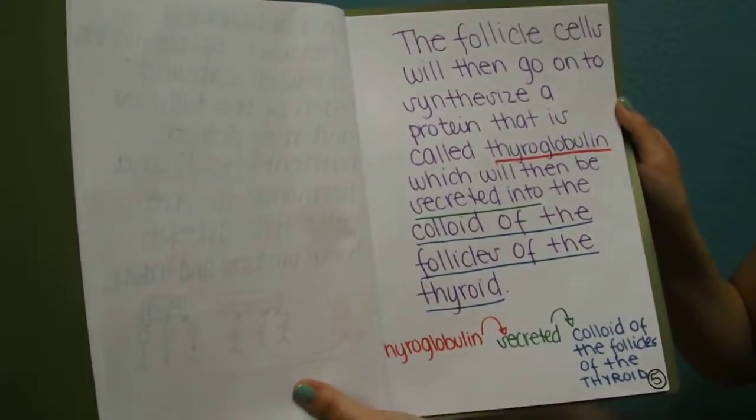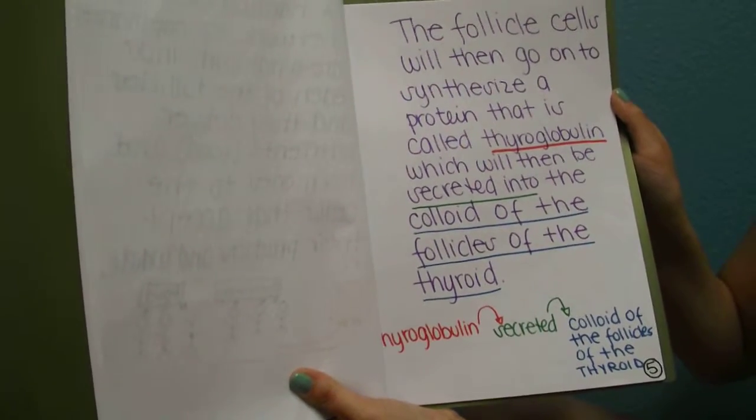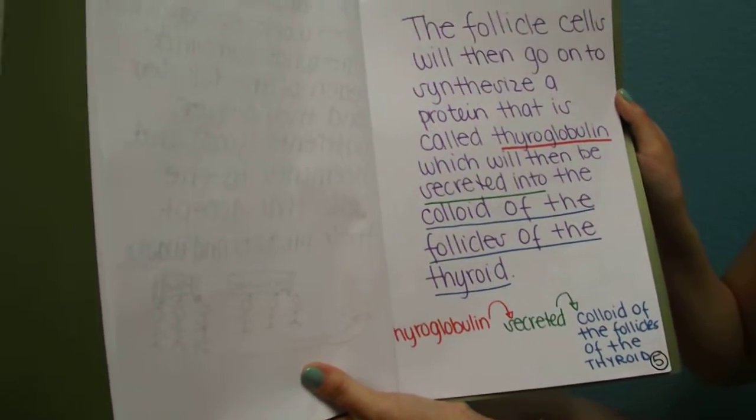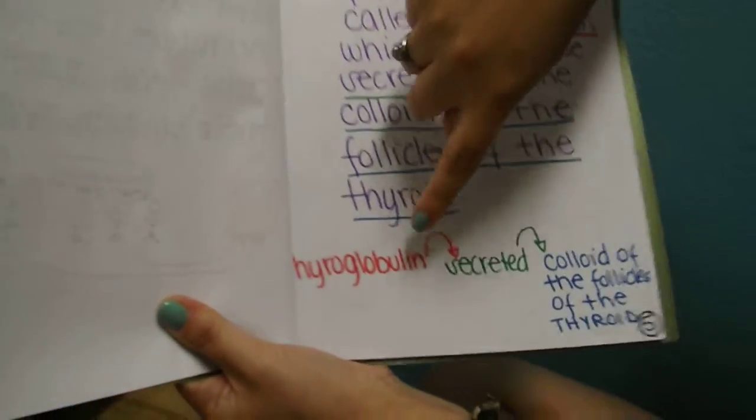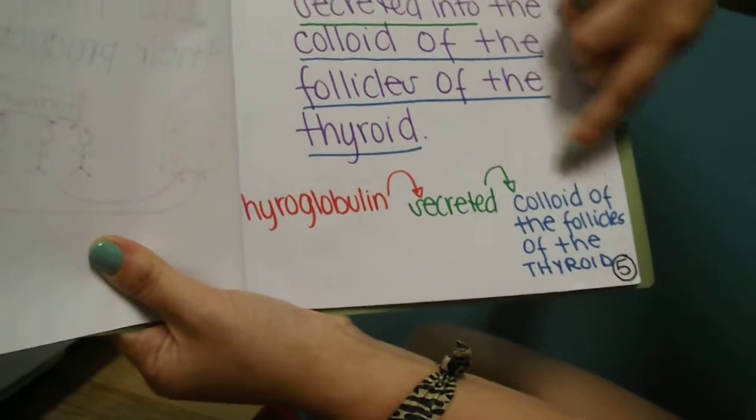The follicle cells will then go on to synthesize a protein that is called thyroglobulin, which will then be secreted into the colloid of the follicles of the thyroid. So thyroglobulin is secreted in the colloid of the follicles of the thyroid.